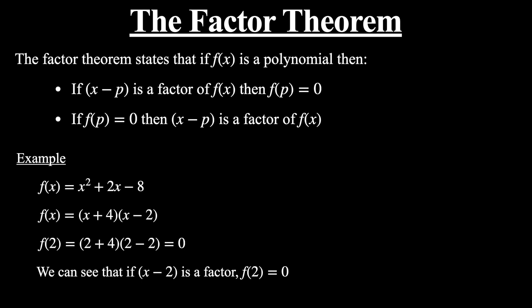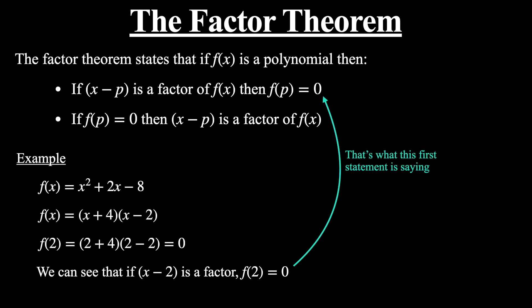In this example we can see that if x minus 2 is a factor, f(2) equals 0. This would be true in any polynomial where we have a factor like x minus 2 — if we plug in 2, that factor equals 0, and therefore the entire function equals 0. That's what the first statement in the factor theorem is telling us: if x minus p is a factor of f(x), then plugging in p makes the function equal 0.